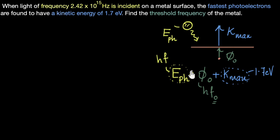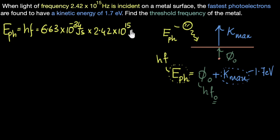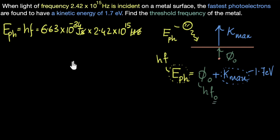The first thing I'll do is calculate the energy of the photon, because from there I can subtract the kinetic energy and calculate the work function, and then calculate the threshold frequency. From Planck's equation, energy of the photon is H × F. H is 6.63 × 10⁻³⁴ J·s and the frequency is 2.42 × 10¹⁵ Hz. The seconds cancel, leaving Joules. I'll keep everything in Joules.